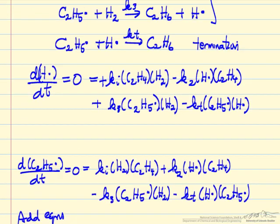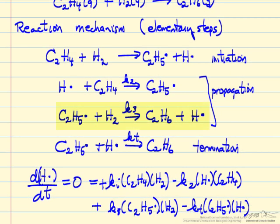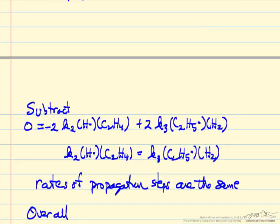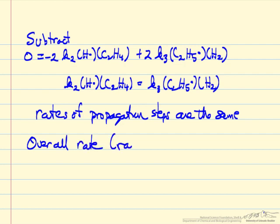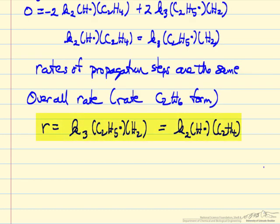The overall rate is how fast we're making product, and we're making product in the third step. We're also making product in the fourth termination step, but that happens only a few times compared to the many times the chain propagation cycles through. So the overall rate is K3 times the dihydrogen gas phase concentration times the ethyl radical concentration — the rate of formation of C2H6. We want to express the concentration of hydrogen atoms in terms of measurable concentrations.